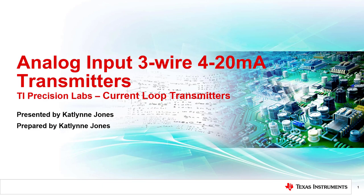Hello, and welcome to the TI Precision Labs lecture discussing the basics of analog input 3-wire 4 to 20 milliamp transmitters. These types of transmitters use a voltage or current input that is translated to the 4 to 20 milliamp output signal. The concepts introduced in this presentation will be described using a mix of discrete solutions and partially integrated solutions using TI's XTR products.